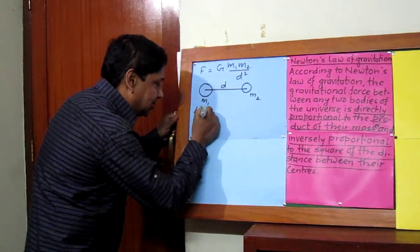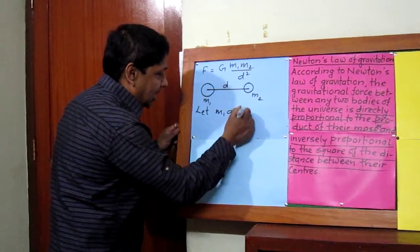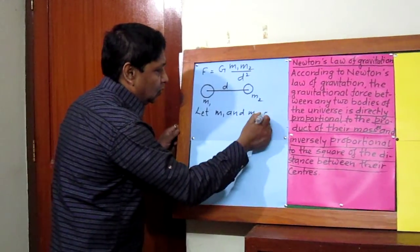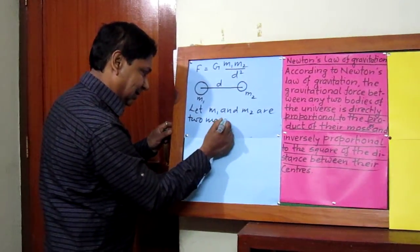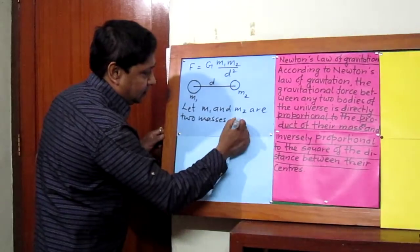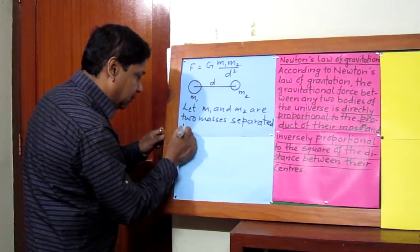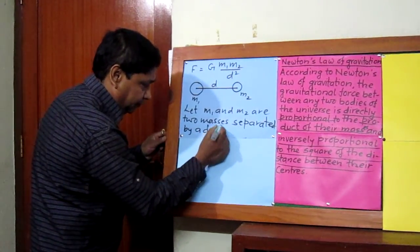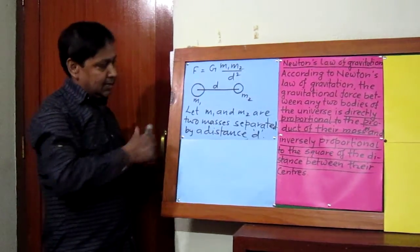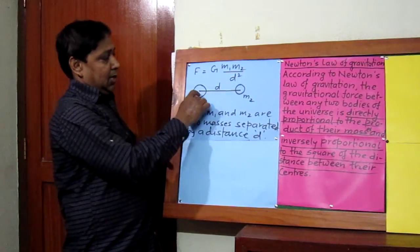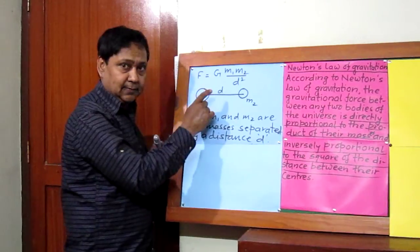This can be written like this: let m1 and m2 be two masses separated by a distance d. So m1 is one mass, m2 is another mass, and they are separated by a distance d.